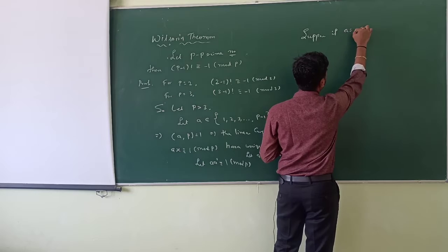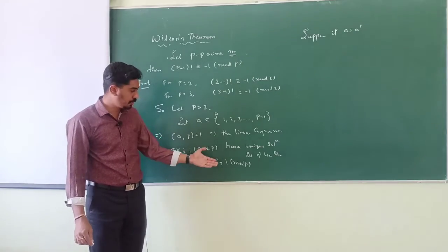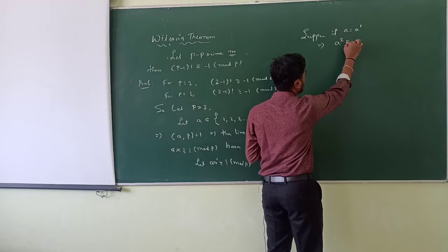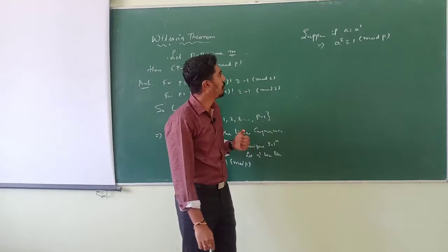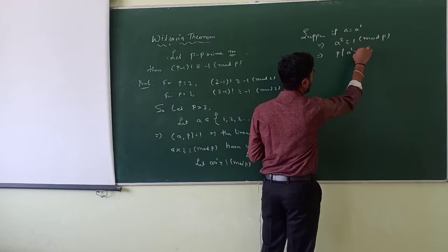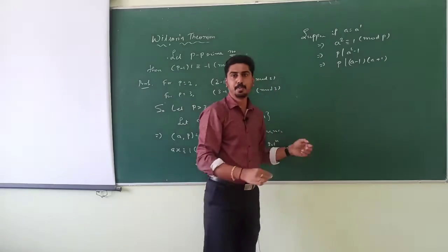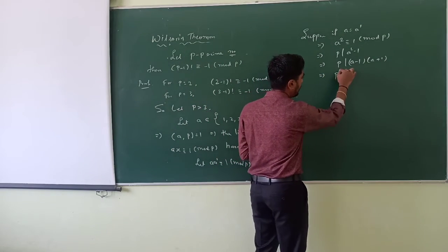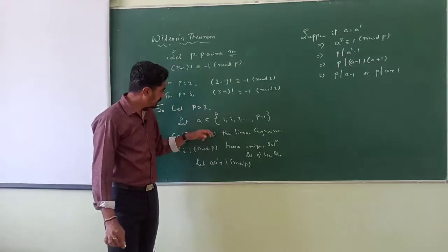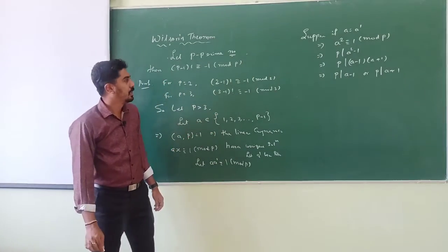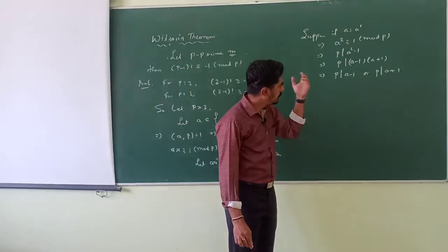Suppose if a equals a', then a · a = a² ≡ 1 (mod p). This implies p divides a² minus 1, or p divides (a minus 1)(a plus 1). Since p is a prime number, we should have p divides (a minus 1) or p divides (a plus 1). Since a is an integer less than p, this should be equal to either 0 or p itself.